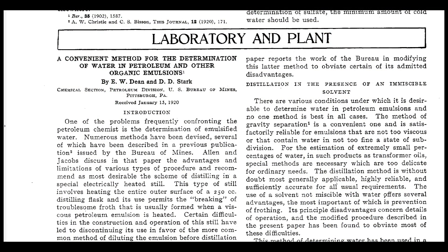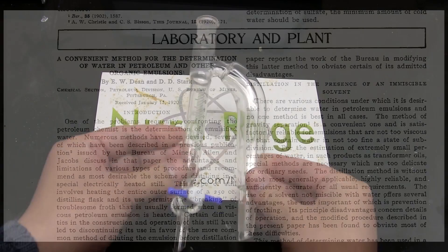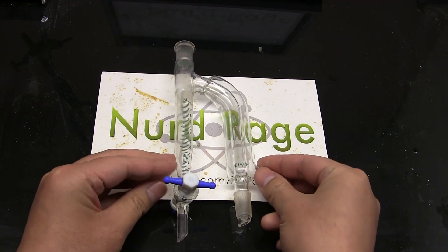So two chemists, E.W. Dean and D.D. Stark ran into the same labor problem when they wanted to analyze the water content of petroleum samples. To solve this they invented the Dean-Stark apparatus.